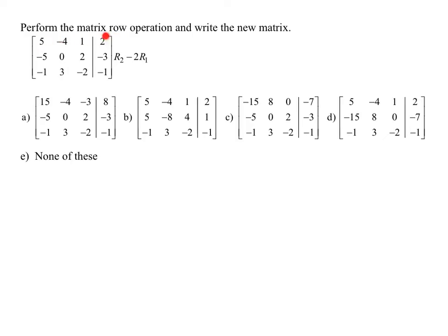In this problem I'm asked to perform the given row operation and apply it to this matrix. What it's telling me to do is take row 2 and subtract 2 times row 1.